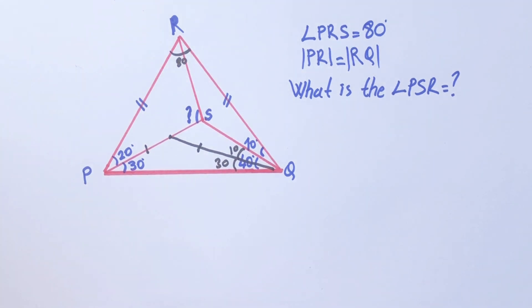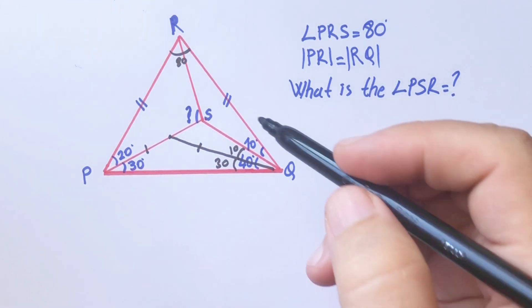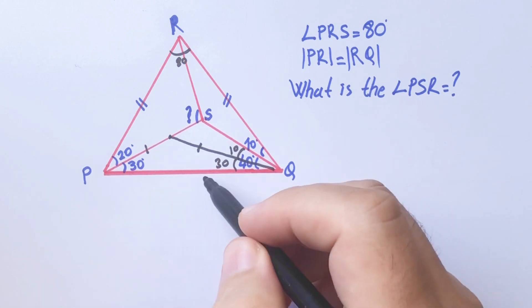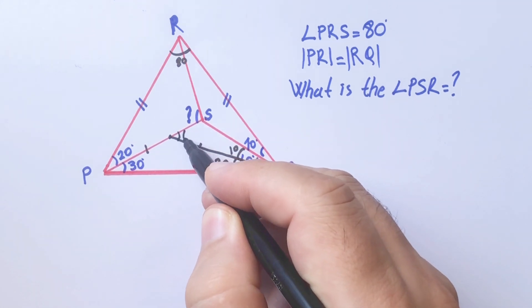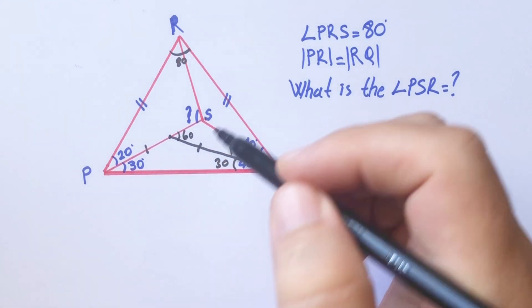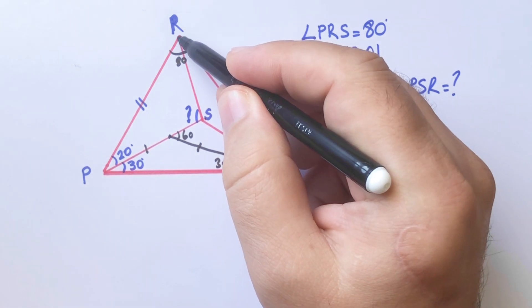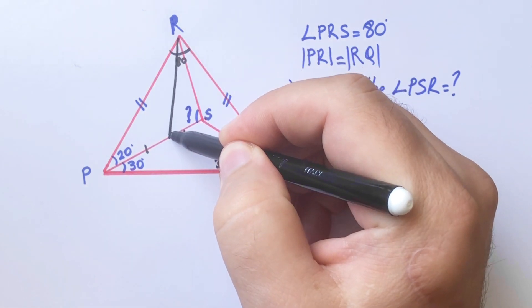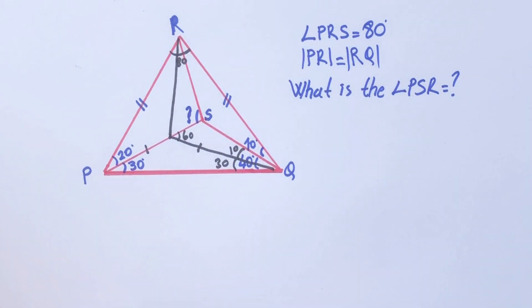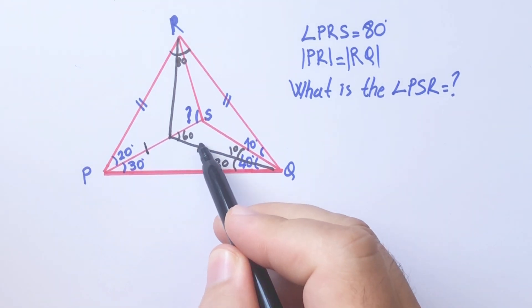If we connect here, this line is a line of symmetry. Why? Because these two lengths are equal, so the biggest triangle is an isosceles triangle. Therefore, our line is a symmetry line.